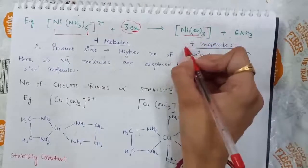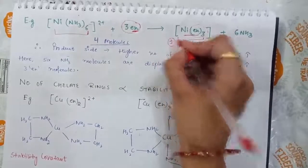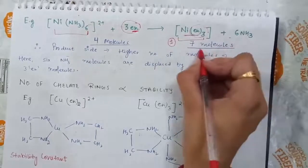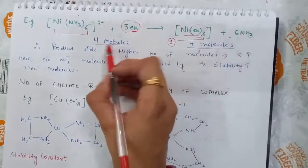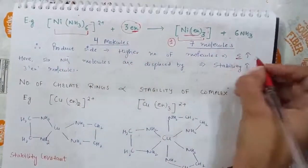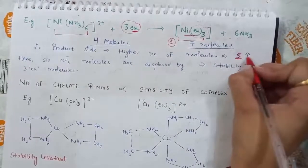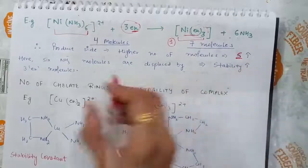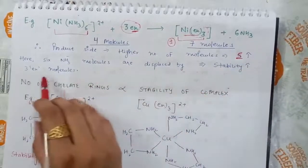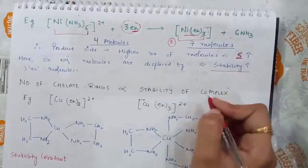On the product side, we have 1 complex plus 6 ammonia molecules — a total of 7 molecules, compared to 4 on the reactant side. This increase in the number of molecules increases the entropy of the system, denoted by delta S. The 6 ammonia molecules displaced by 3 EN molecules lead to increased entropy, and therefore stability increases.